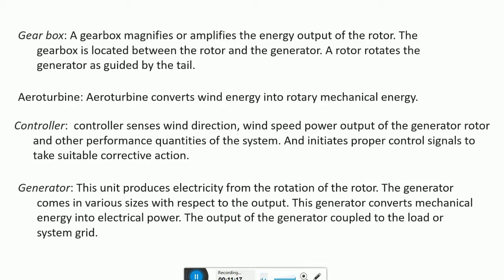The gearbox magnifies or amplifies the energy output of the rotor. It is located between the rotor and generator and rotates the generator as guided by the tail rotor wind. This converts wind energy into rotary mechanical energy. The controller senses wind direction, wind speed, power output of the generator, rotor, and other performance quantities of the system, and initiates proper control signals to take suitable corrective action.